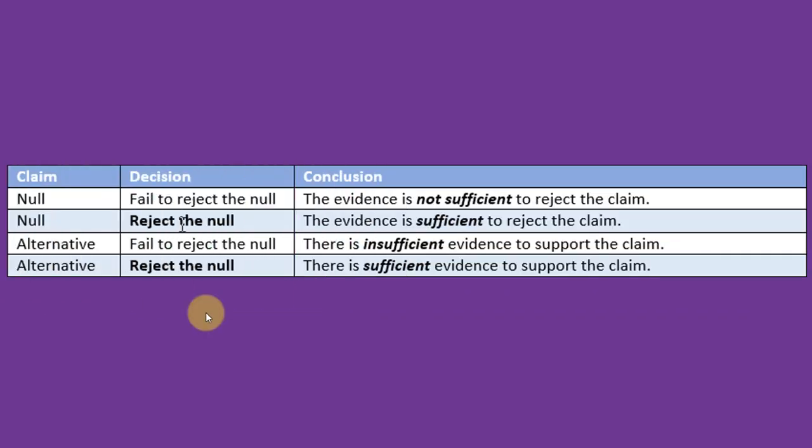The last table is helpful when you are getting to the point where you've got to draw your conclusion. And the thing I see a lot of students confuse is they can get the decision whether to fail to reject the null or reject the null, but then they will not state the conclusion properly.